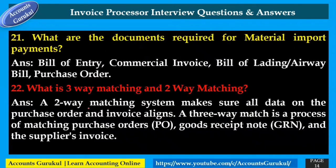What is two-way matching and three-way matching? A two-way matching system ensures all data on the purchase order and invoice aligns — it matches the invoice with the purchase order. A three-way match is a process of matching the purchase order, Goods Received Note (GRN), and the supplier's invoice. The three-way match adds the GRN to provide greater control over invoice processing.